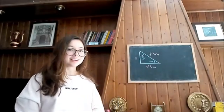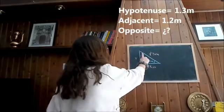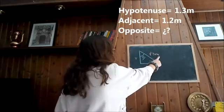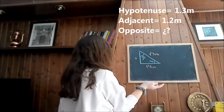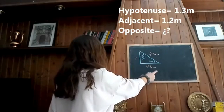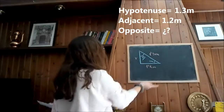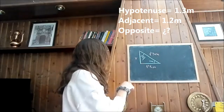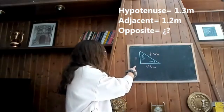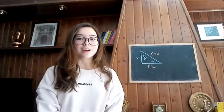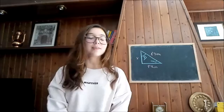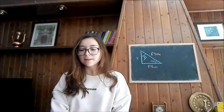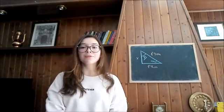In this angle, we know that the hypotenuse is 1.3 meters and that the adjacent is 1.2 meters. But we don't know the value of the opposite. So we are going to calculate the value of the opposite. To calculate it, we need to use the hypotenuse formula.